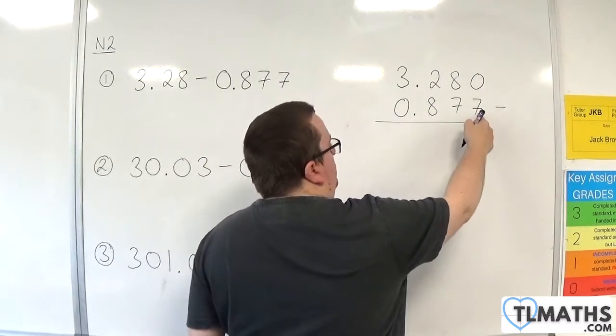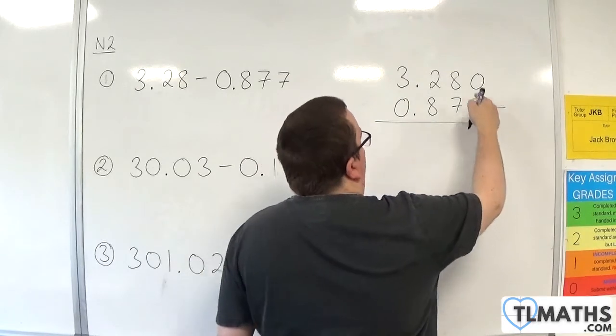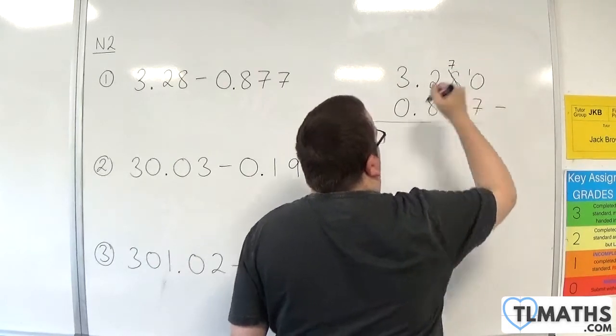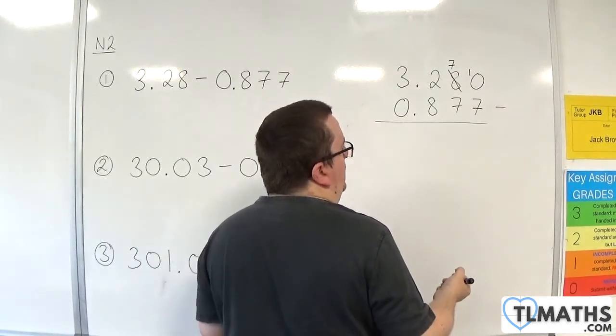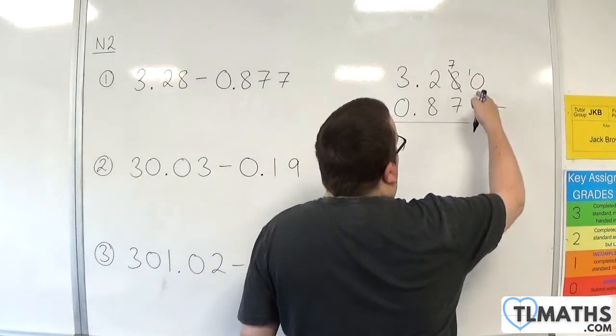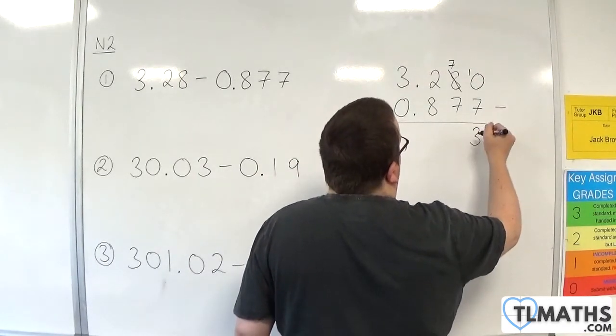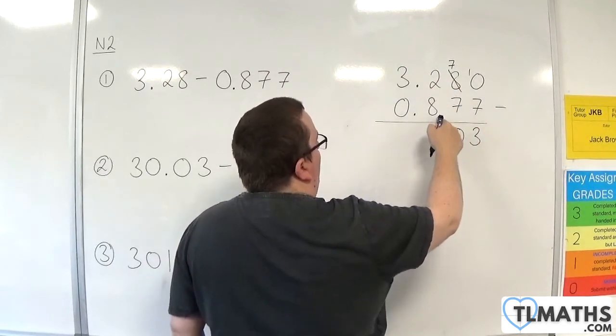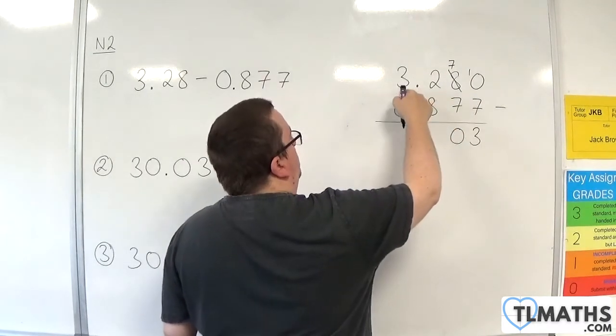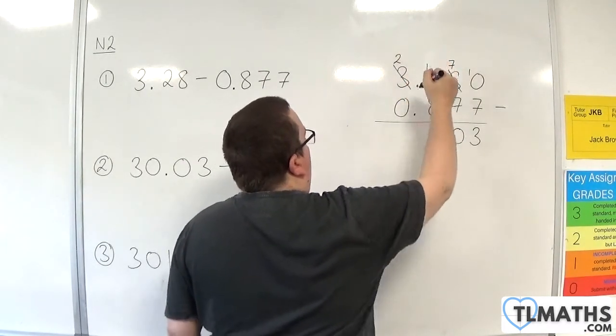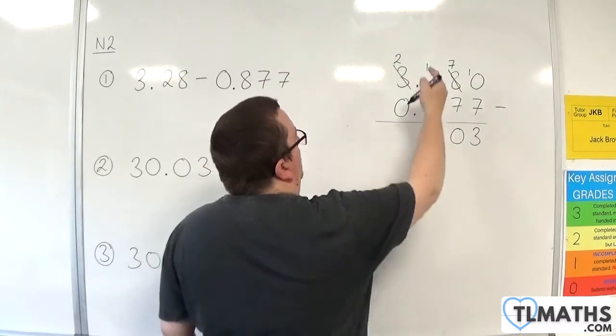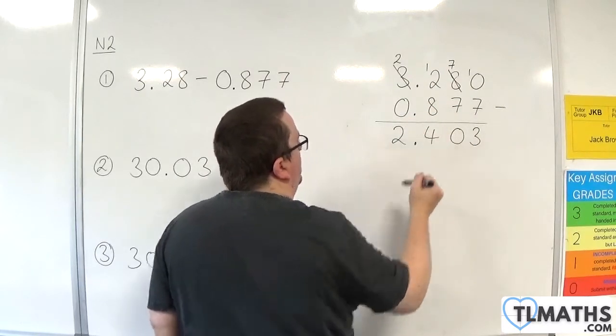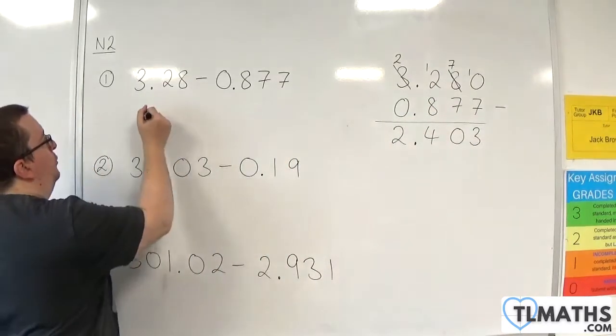Now we have 0 take away 7, which we can't do, so I need to borrow 1 from the 8. The 8 becomes 7, and I've now got 10 take away 7, which is 3. 7 take away 7 is 0. Then we've got 2 take away 8, which I can't do, so I need to borrow 1 from the 3, and the 2 becomes 12. 12 take away 8 is 4. 2 take away 0 is 2. Bring the decimal point down. We have 2.403.